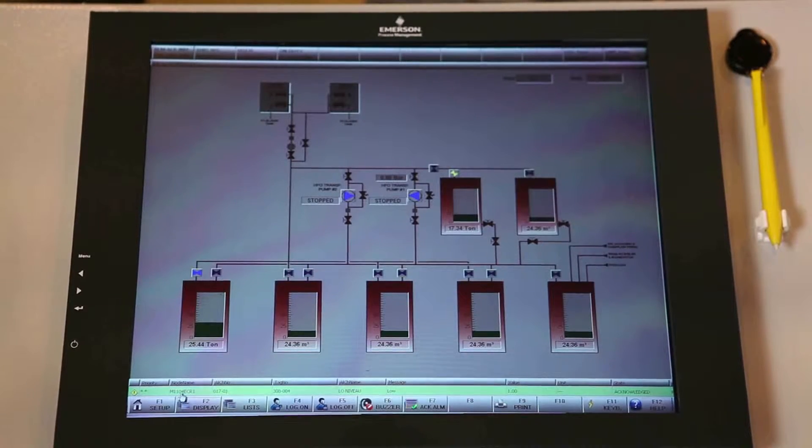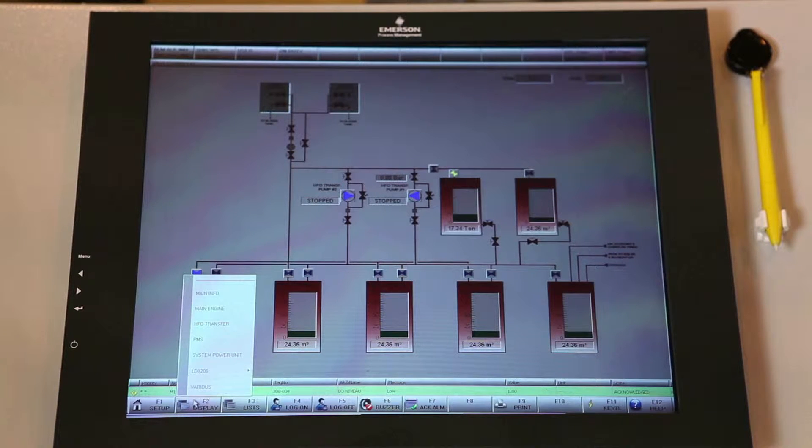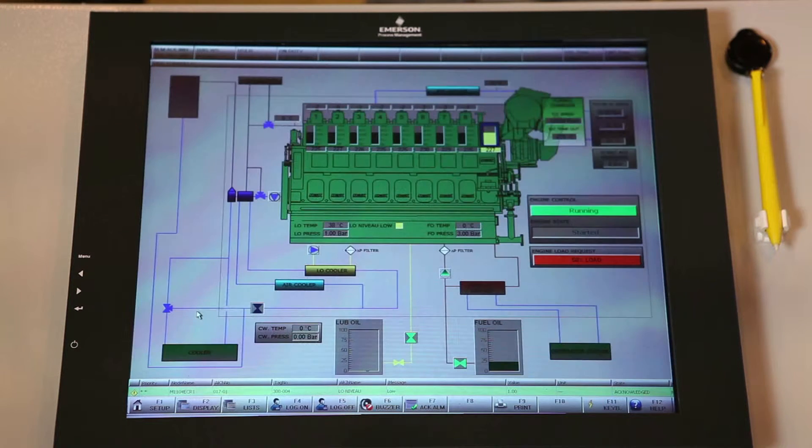The Mimics we use are very user-friendly. By choosing F2 for example, you can walk through all available Mimics. In this case for example, a main engine where you can see all relevant temperatures, pressures, etc.